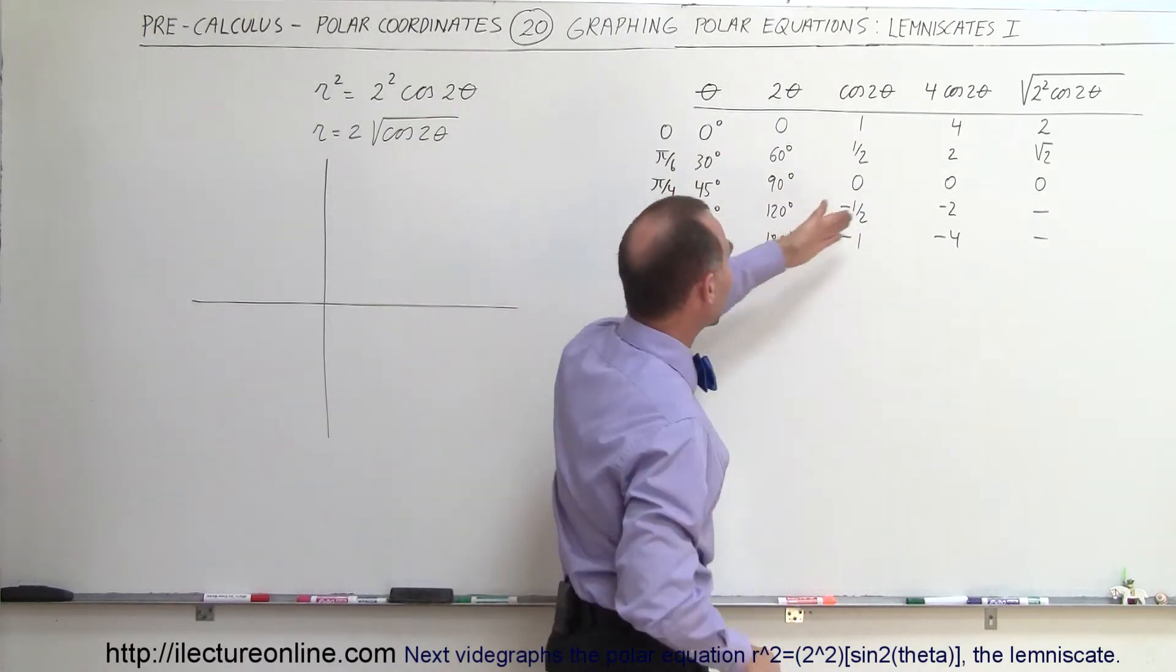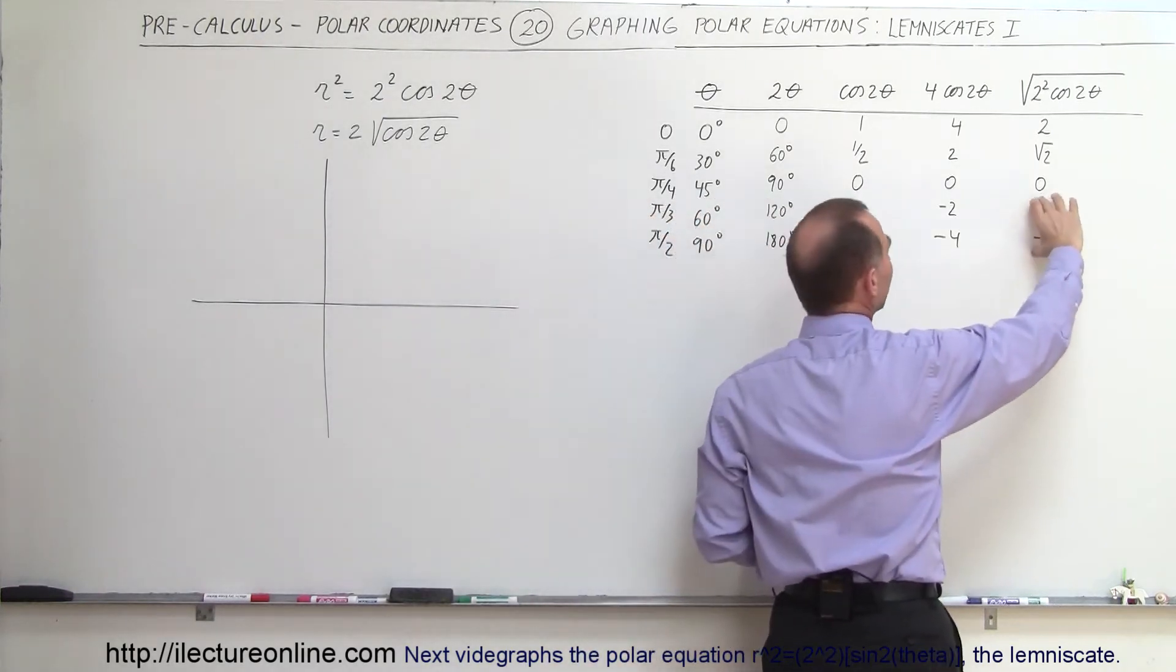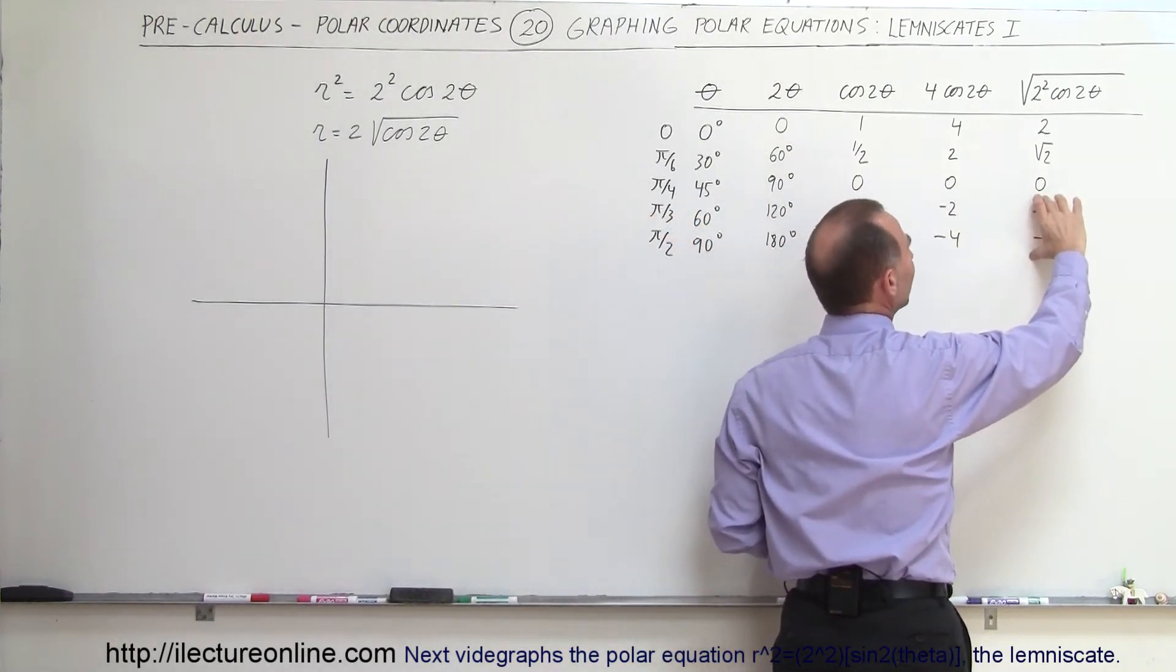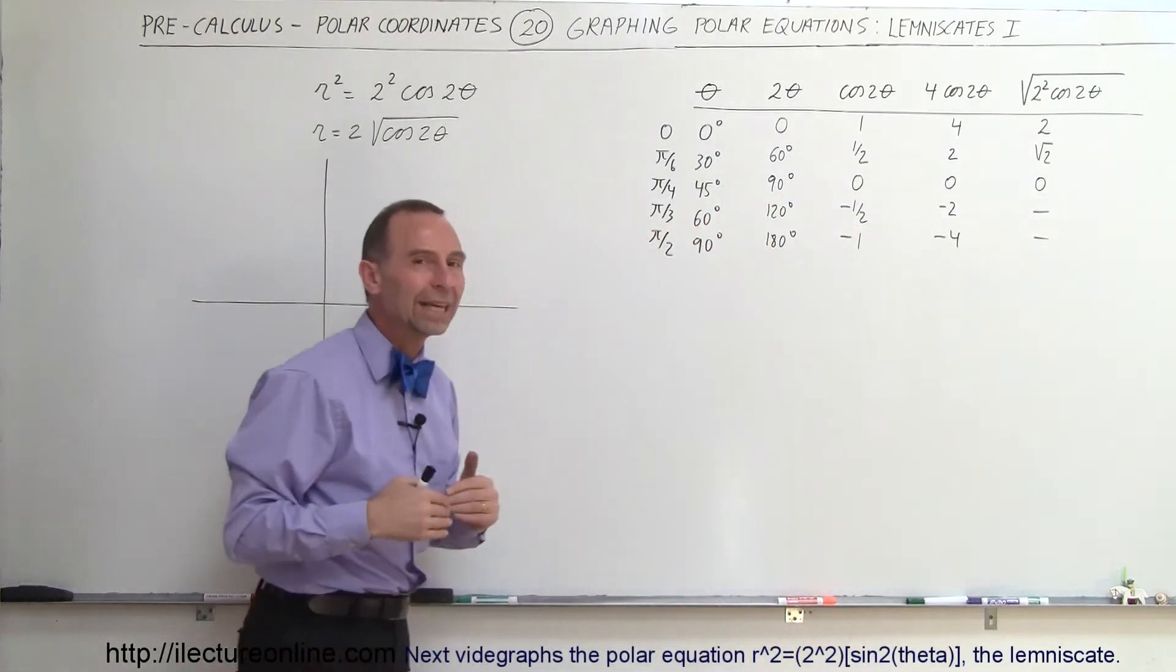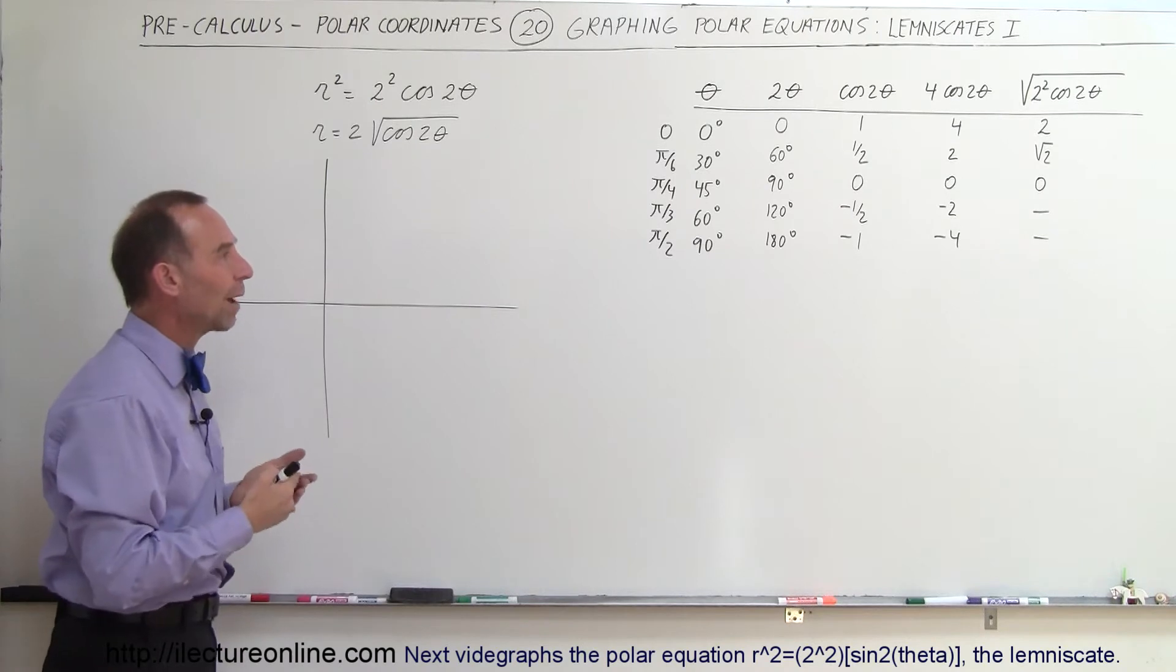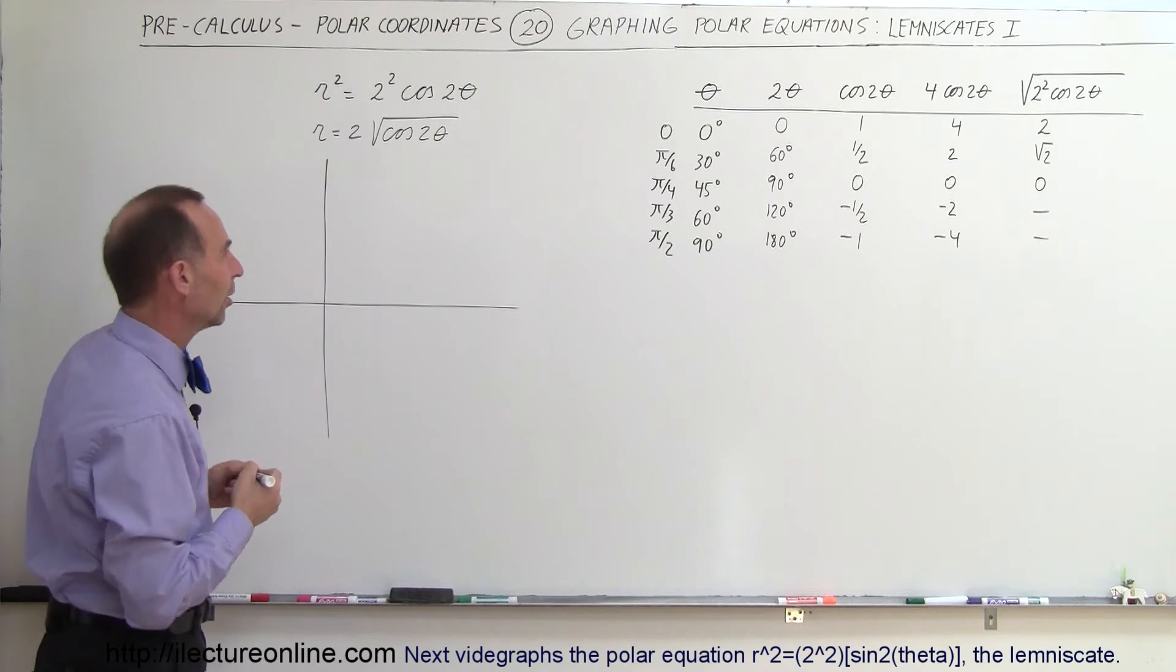Multiply times 2 squared or 4, we get these values, but then when we take the square root of those, notice that the last two values, since they're negative, we cannot get acceptable values there, so they're not allowed. So therefore we can only get a portion of that particular graph, only of the angles that are allowed in this case.